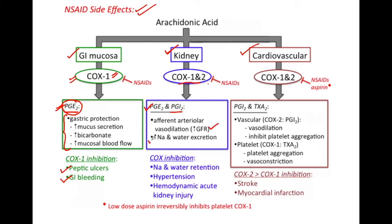To maintain renal hemodynamics, they cause excretion of sodium ions and water. So looking at the actions of prostaglandins and prostacyclins, we can say that COX inhibitors — both non-specific NSAIDs and COX-2 inhibitors — can have adverse effects on the kidney.